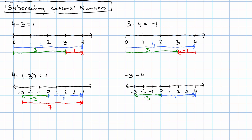What about negative 3 minus 4? That's going to start at the end of 4 and go to the end of negative 3. That's negative 7.